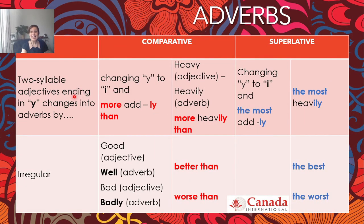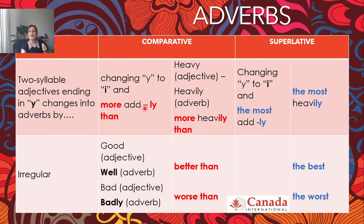Two-syllable adjectives ending in y change into adverbs by first changing that y into i and then adding ly. To make the comparative, it's going to be more, then the adjective, then ly, then than. So: heavy is the adjective, the adverb will be heavily, and then the comparative of the adverb is going to be more heavily than. For the superlative it's the same logic — we change the y to i and then use the most and then ly, so: the most heavily.